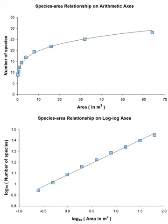The first type, 'samples,' is a census of a contiguous habitat that grows in census area, also called mainland species-area relationships. The second, 'isolates,' is a census of discontiguous habitats, such as islands, also called island species-area relationships. Michael Rosenzweig also notes that species-area relationships for very large areas — those covering different biogeographic provinces or continents — behave differently from species-area relationships from islands or smaller contiguous areas.